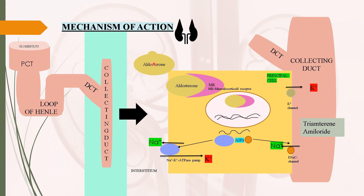Aldosterone binds with mineralocorticoid receptors present on the principal cells. This results in formation of an aldosterone-receptor complex. This complex in turn binds to the nucleus, resulting in transcription of genes, translation of mRNA, and production of aldosterone-induced proteins. These proteins increase the availability and activity of epithelial sodium channels and the sodium-potassium ATPase pump. Thus, under the influence of aldosterone, sodium reabsorption takes place in the collecting duct.